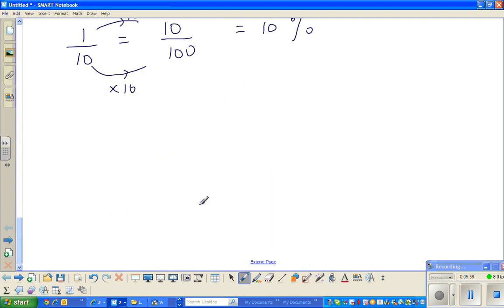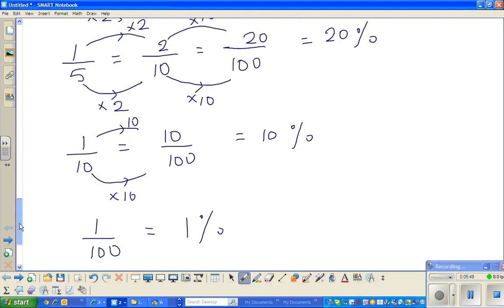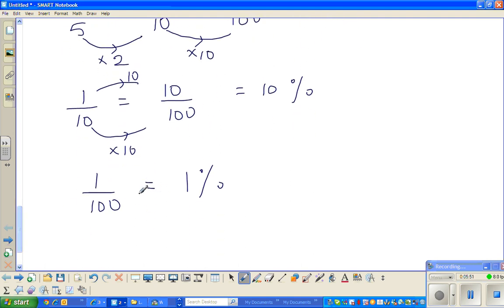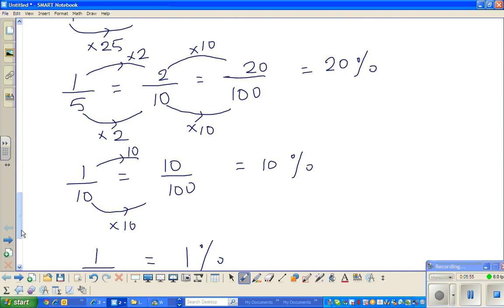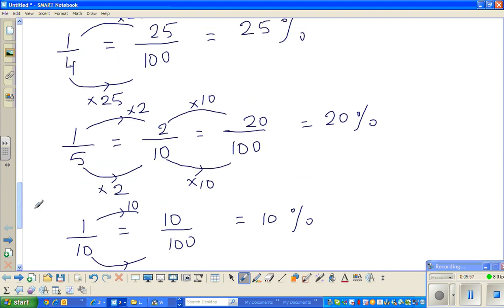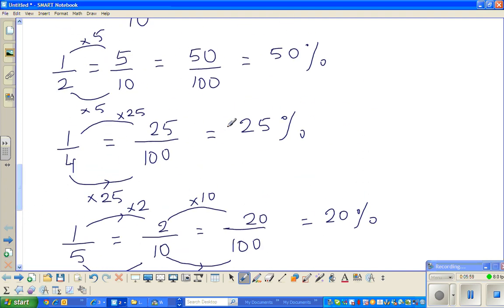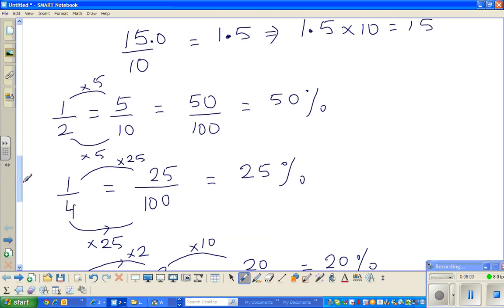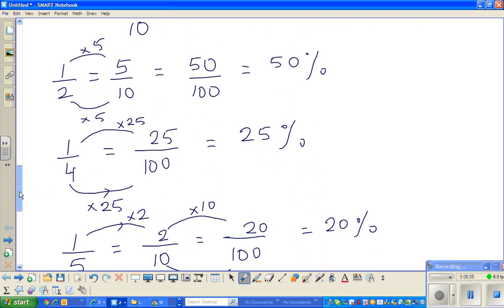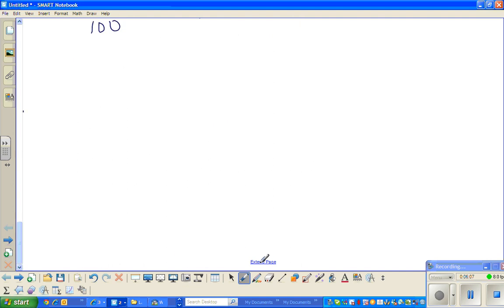And, finally, one more. One hundredth. One out of 100 is 1%. So, we have seen 1% is 1/100. 10% is 1 tenth. 20% is 1 fifth. 25% is a quarter. And, 50% is a half. So, let us use these facts to find some percent.